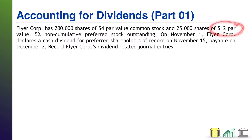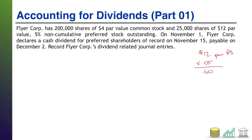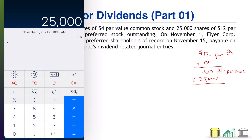To calculate that, we know that the par value of the preferred stock is $12 per share. So, $12 par for preferred shareholders. We know that they are entitled to a 5% dividend, so times 0.05. That works out to a $0.60 dividend per share. We also know that there are 25,000 shares of preferred stock currently outstanding, so times 25,000. I'll pull out my calculator: 0.6 times 25,000 works out to $15,000.